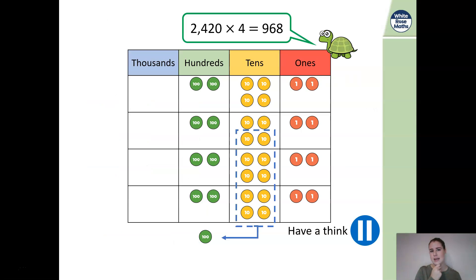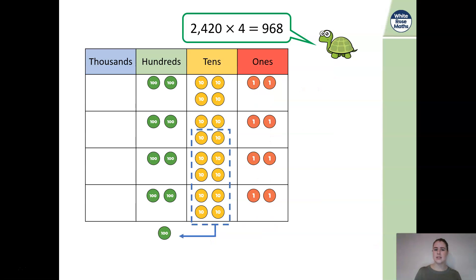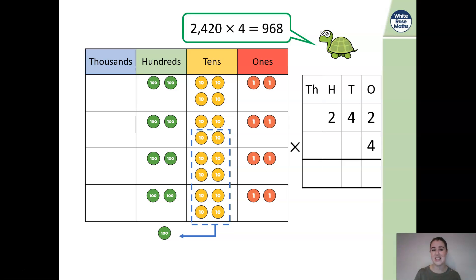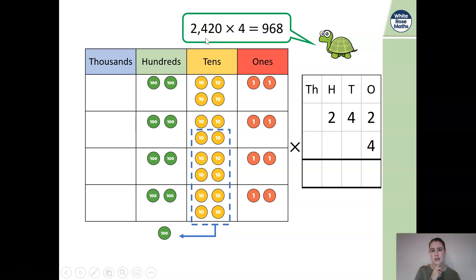Tiny has done a calculation showing that 2,420 multiplied by 4 is 968. Pause the video — can you spot Tiny's mistake? I think Tiny may have done a different calculation: 242 multiplied by 4. My first clue is I started with a number in the thousands — if I'm multiplying, my number gets bigger. Yet the answer 968 is smaller than 2,420, so I know there's been a mistake. He's just forgotten to include the zero and the thousands.